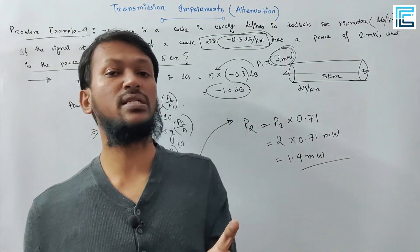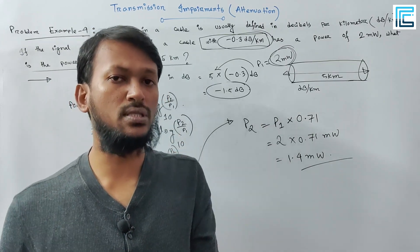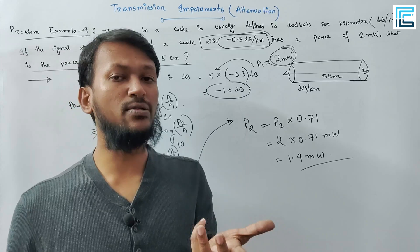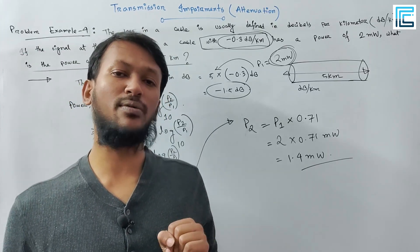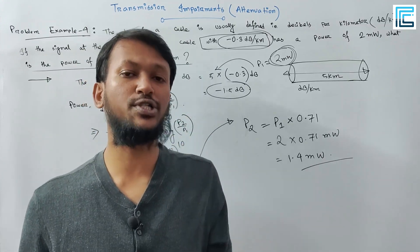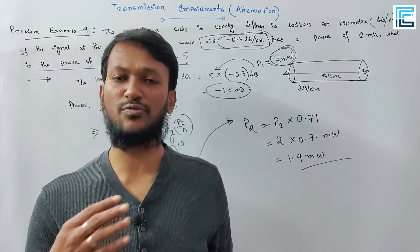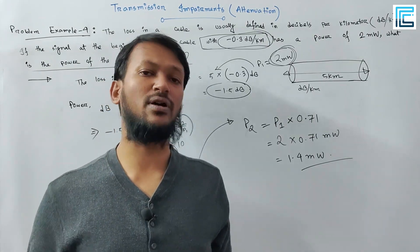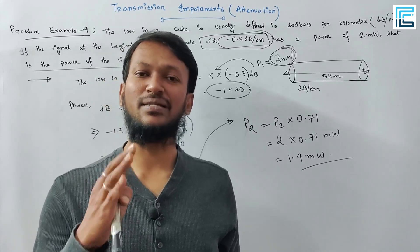The most important thing is that the receiver unit has to provide gain to compensate, but that is very difficult. So the most important transmission impairment here is attenuation, and understanding the math to solve attenuation problems is key.